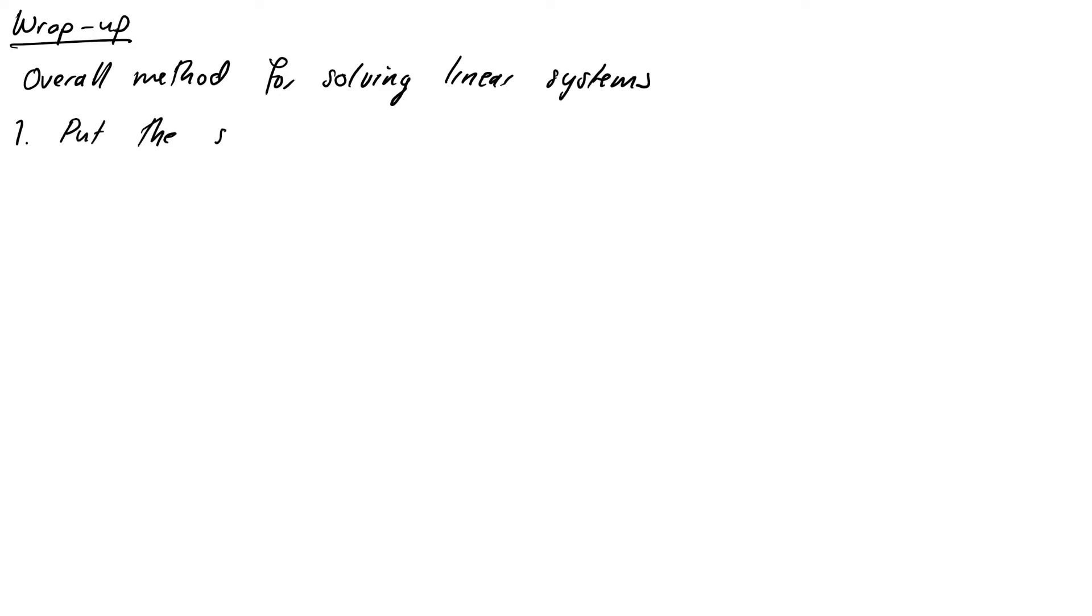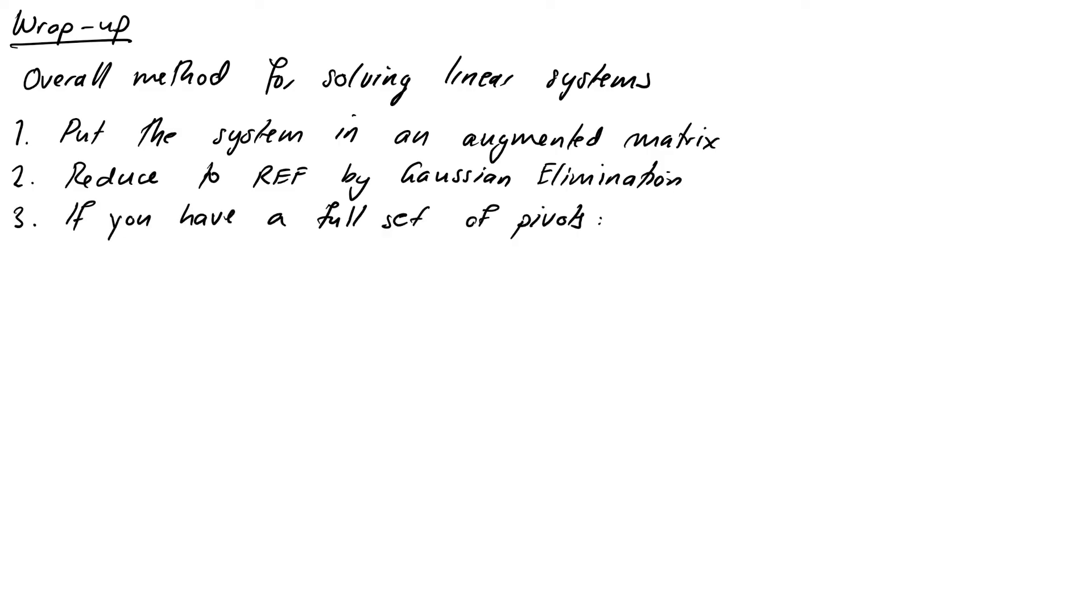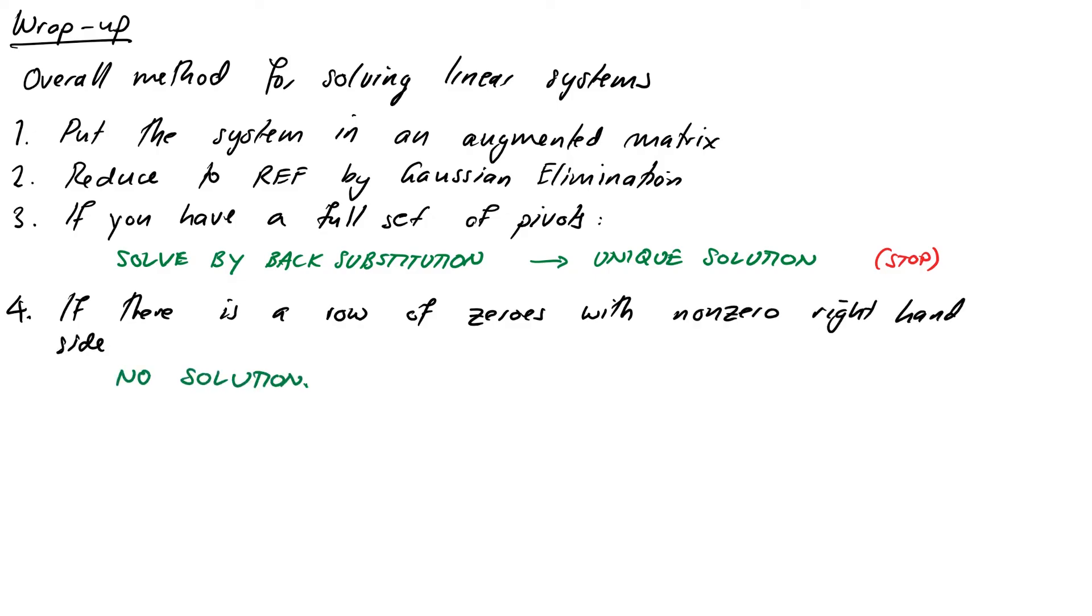Step 1, we want to put the system in an augmented matrix. Step 2 is reduce your matrix to row echelon form using Gaussian elimination. If you have a full set of pivots, this is step 3, go ahead and solve your system using back substitution, then stop. However, if there is a row of zeros with a non-zero right-hand side, then there is no solution and you should stop.